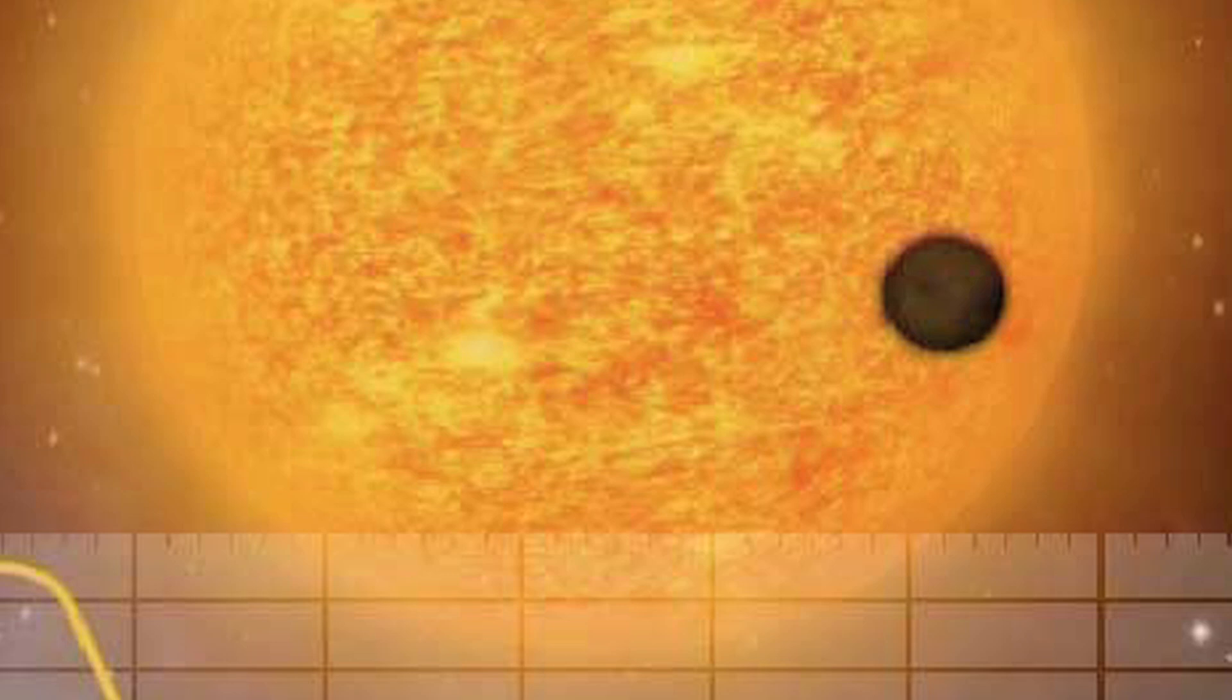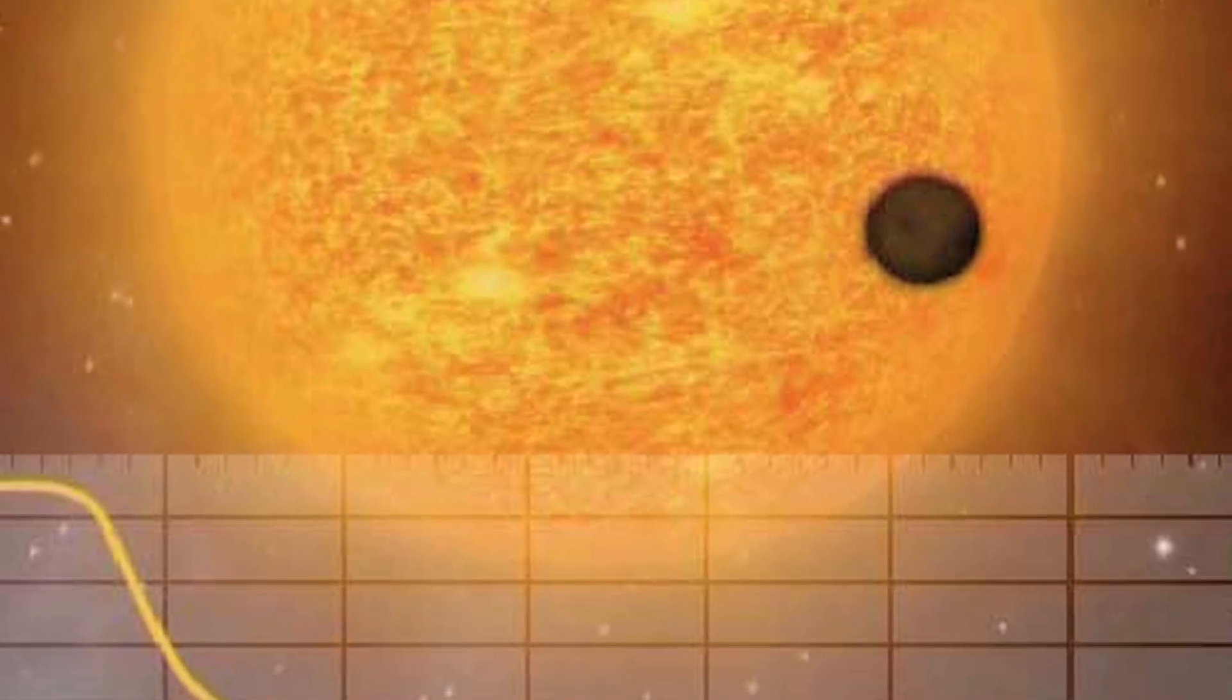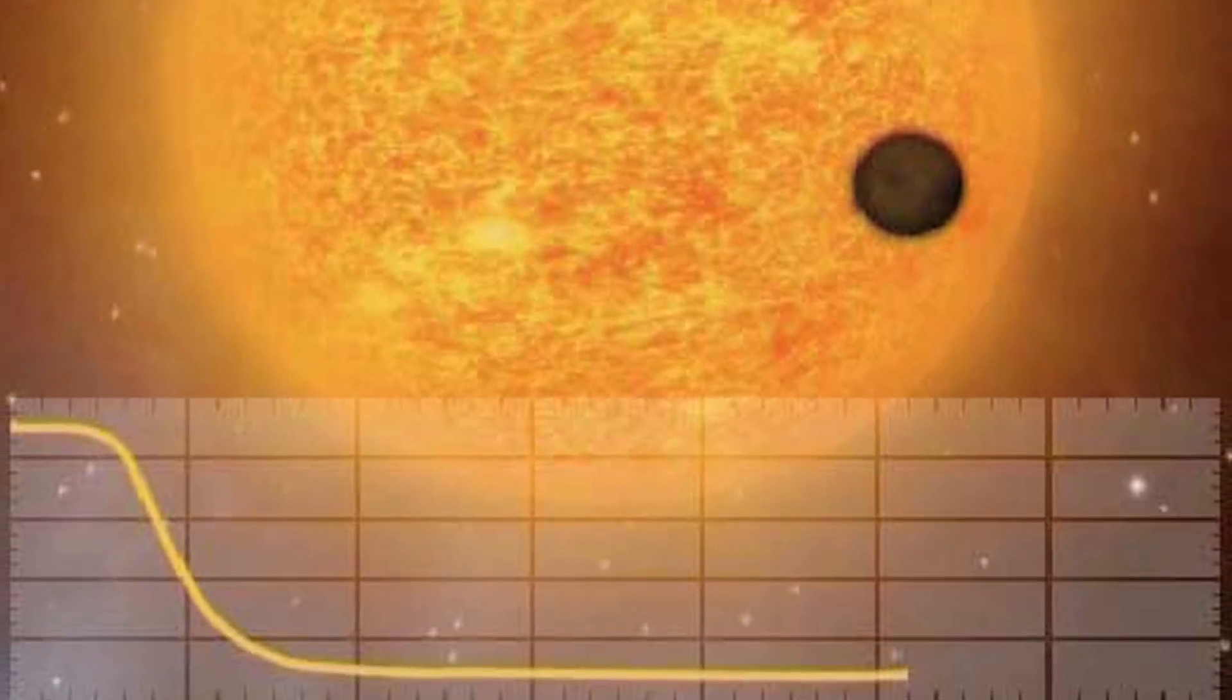ExoplanetSat is looking for a kind of planet we call transiting planet. Transiting planets go in front of their stars, seen from Earth, and they cause a tiny drop in brightness of the star as they go in front of the star. All planets are orbiting their stars,